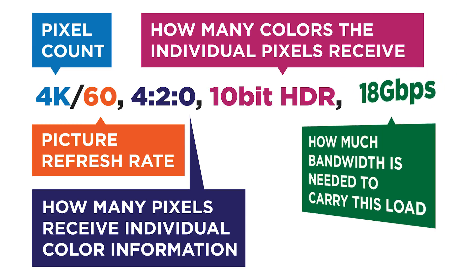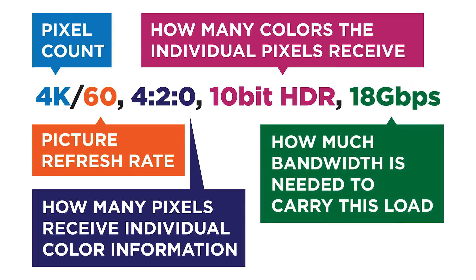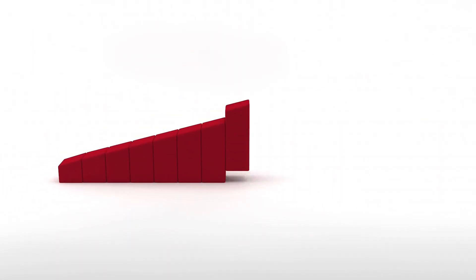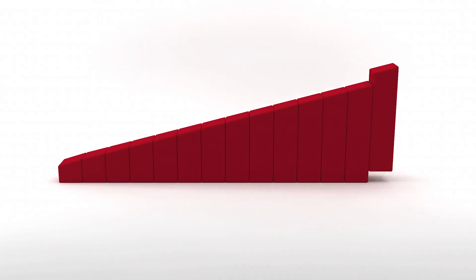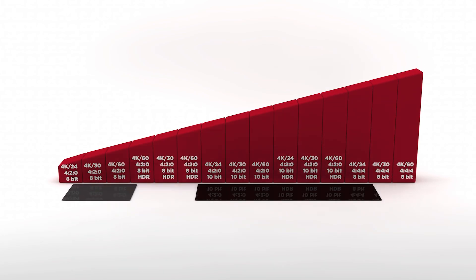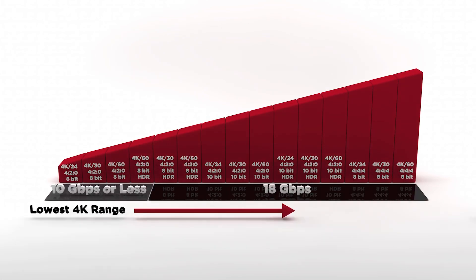Finally, gigabits per second is the data bandwidth needed to carry all of this information to create the picture. As anything increases in the spec, a higher bandwidth is needed. So, as you see, the term 4K encompasses a wide range. Anything less than 18 gigabits per second bandwidth is on the low-end range of the 4K spectrum.